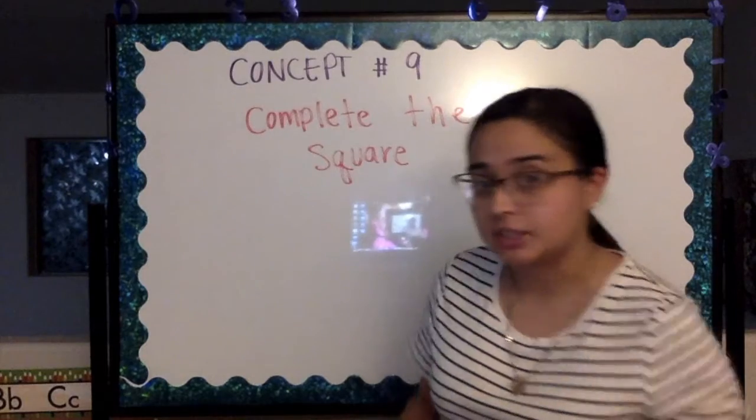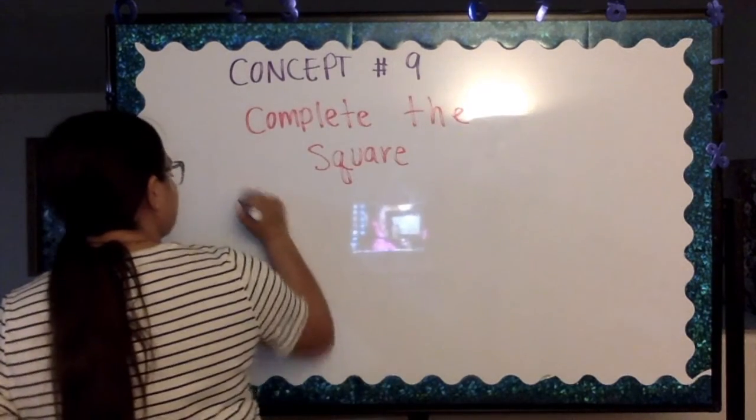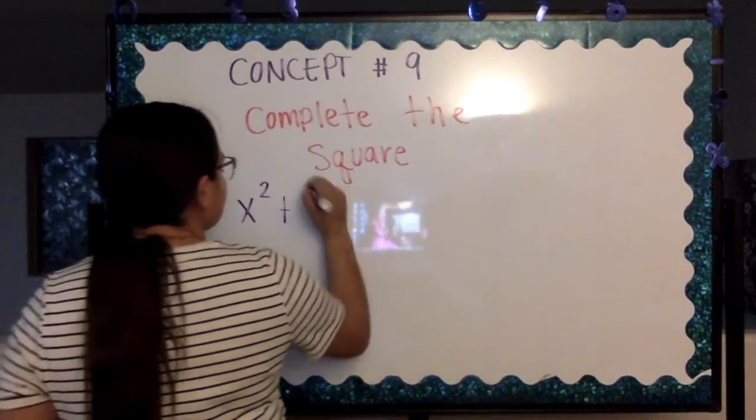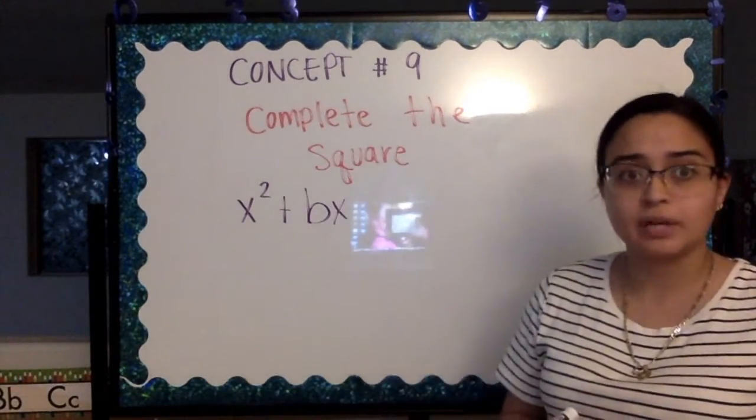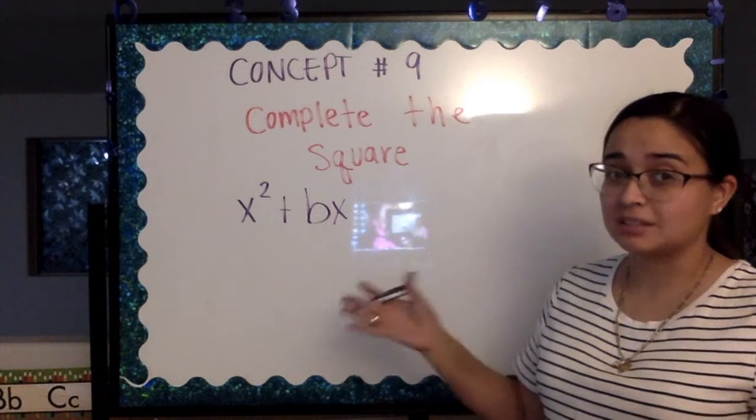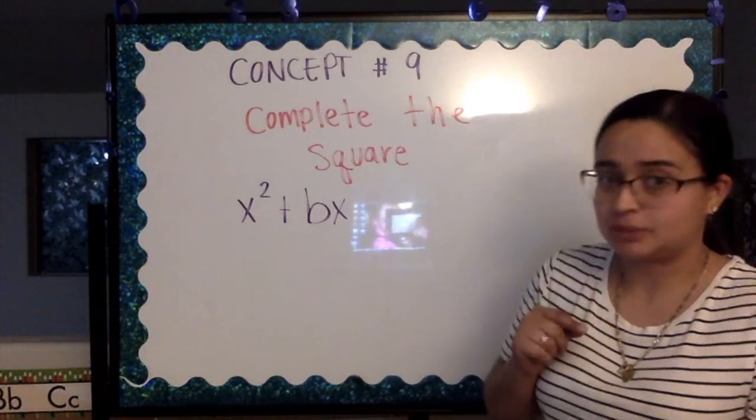Let's say we have an expression that looks like this. We have an expression that looks like that. We can complete the square by doing one simple step.